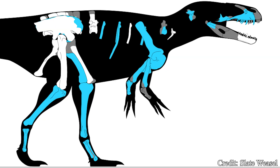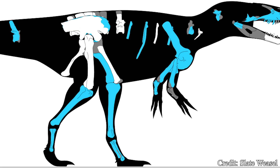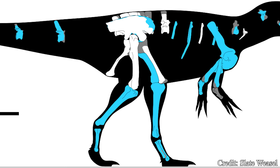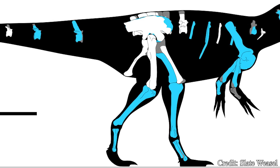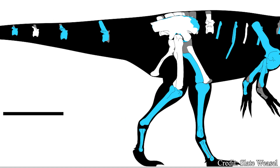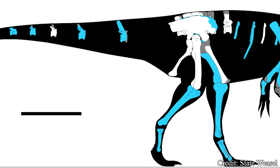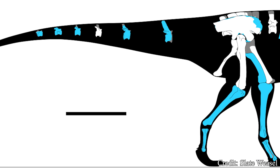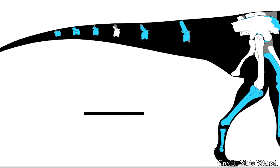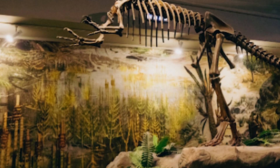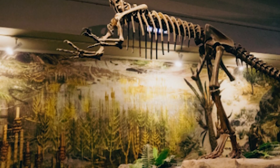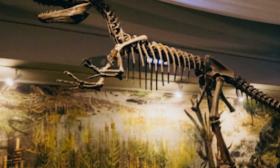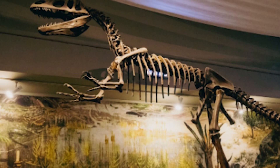Despite being considered the typical theropod, we actually do not know too much about the general build of Megalosaurus, due to a lack of complete skeletons. As illustrated in this diagram, while some of the arms and legs are known, a majority of the body, tail, neck, and skull behind the snout have not been recovered. However, remains we do have, as well as gaps filled in by fellow Megalosaurids and other medium-sized theropods, do give paleontologists a good idea of what this creature was actually like.